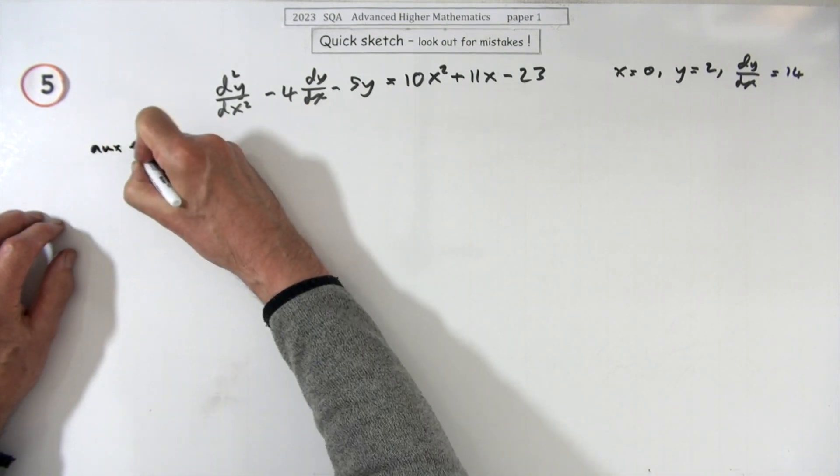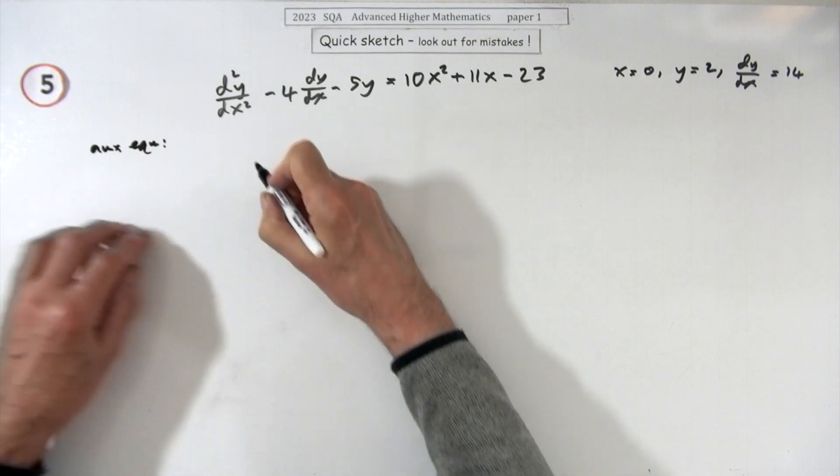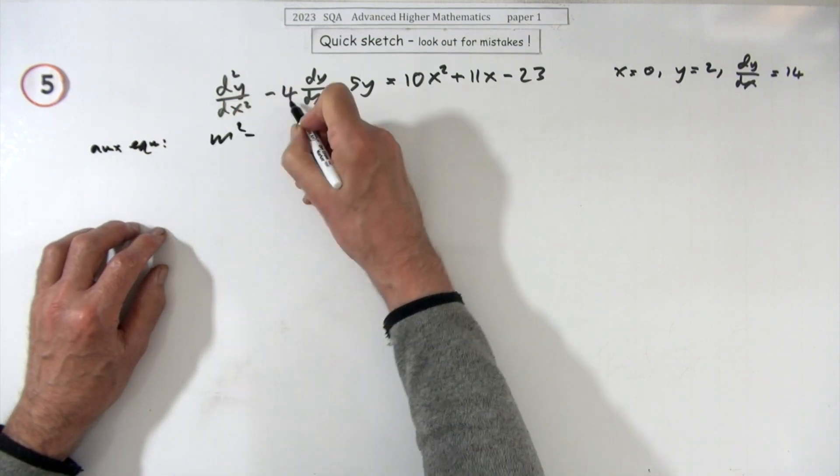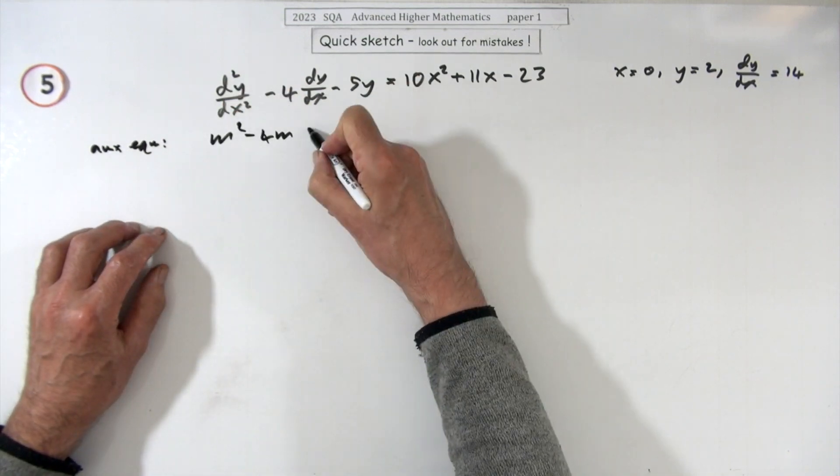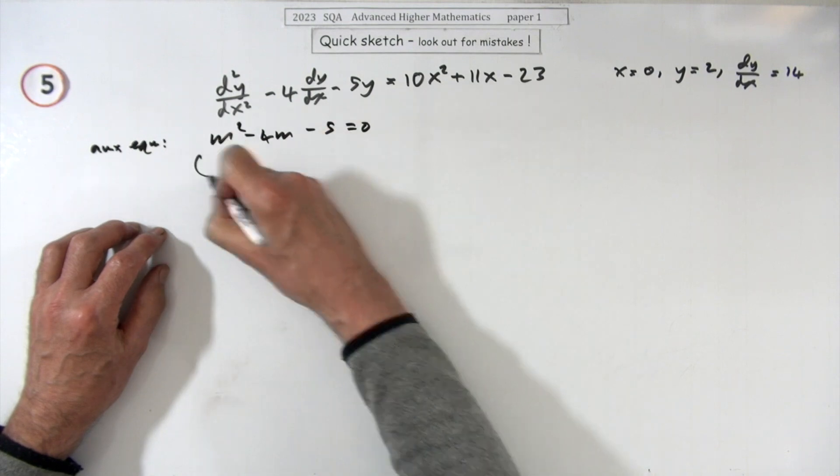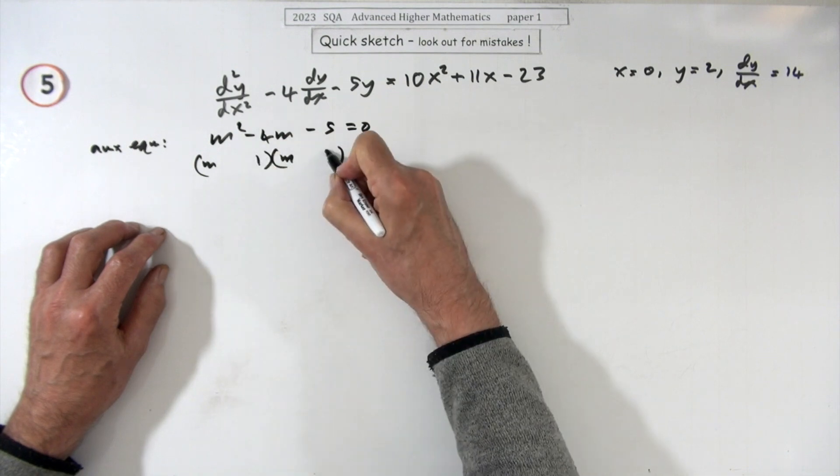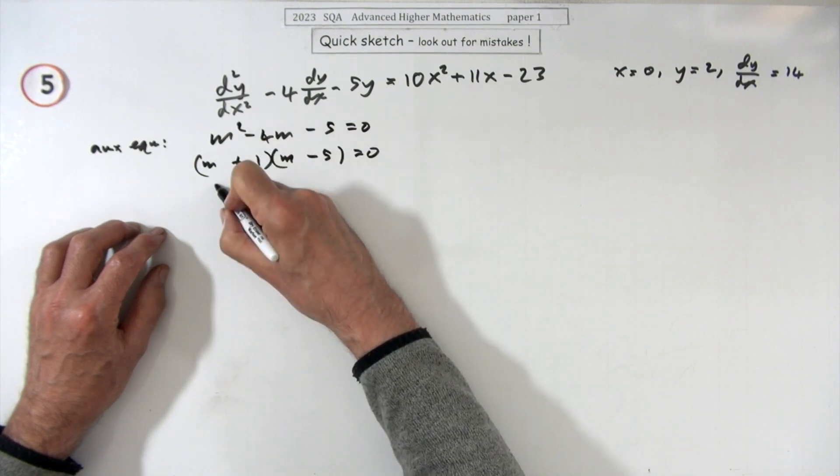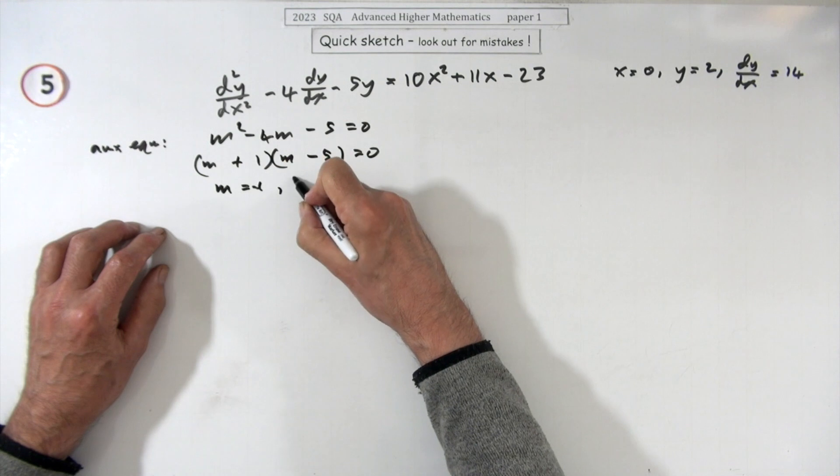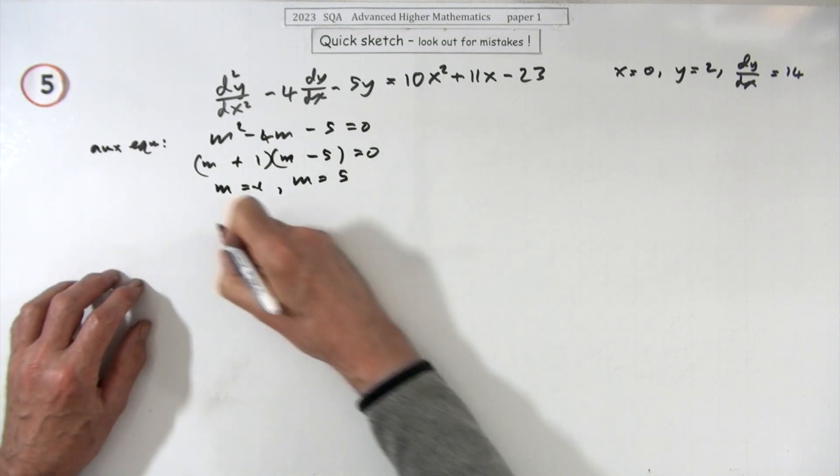That'll be m squared minus 4m minus 5 equals 0, so that's just staring you in the face then, isn't it? 1 and 5, minus the 5 plus the 1, m is negative 1, m is 5.